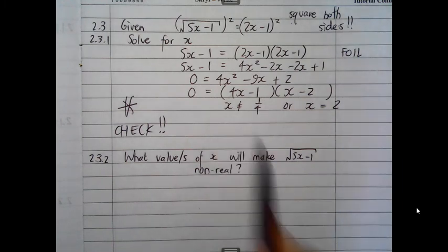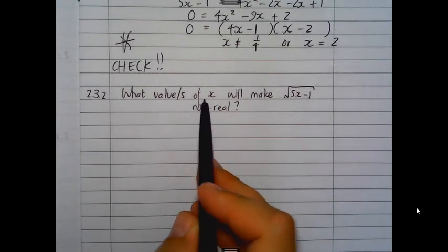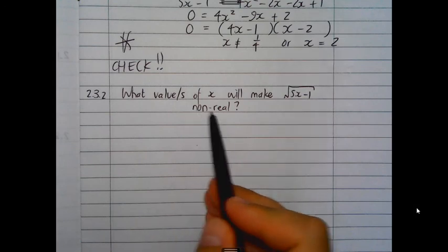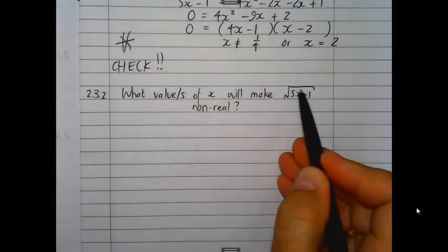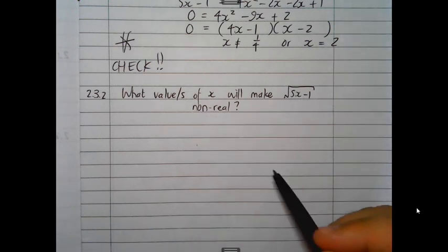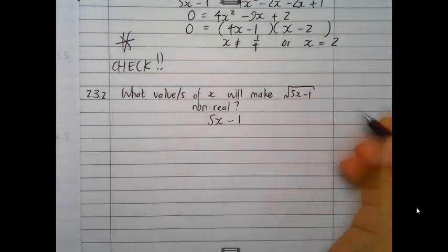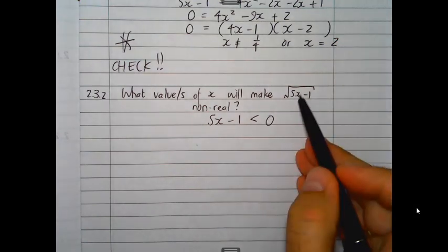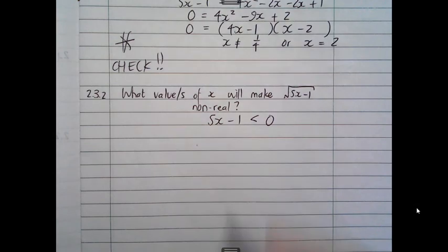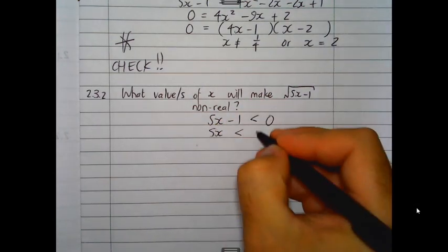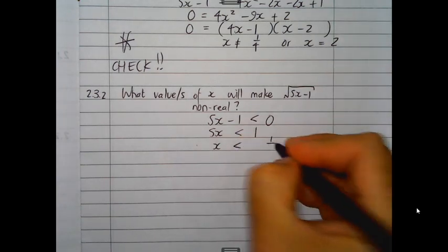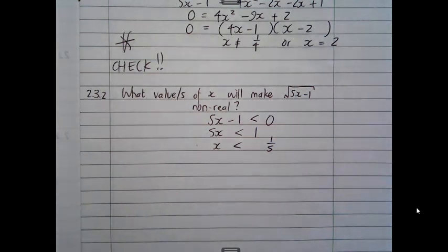For 2.3.2, what values of x make root(5x minus 1) non-real? A square root of a negative number is non-real, so we need 5x minus 1 less than 0. Solving: 5x less than 1, meaning x less than 1 over 5. I trust this revision worksheet has been of benefit — hopefully you've learned a little and dusted off some cobwebs. Good luck for the next year, and I'll hopefully upload a few more videos soon.